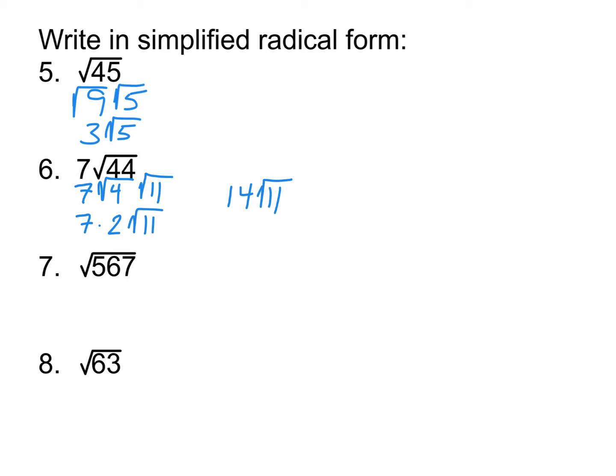Okay. Number 7. Now number 7 is a bigger number. When doing something like this, you pretty much start at the top end of your perfect squares and start dividing from there. So 567 divided by 225. No, that's not even divisible by 5, so that's definitely not going to work. 567 divided by 196. Does that work? No. That gives us a decimal.